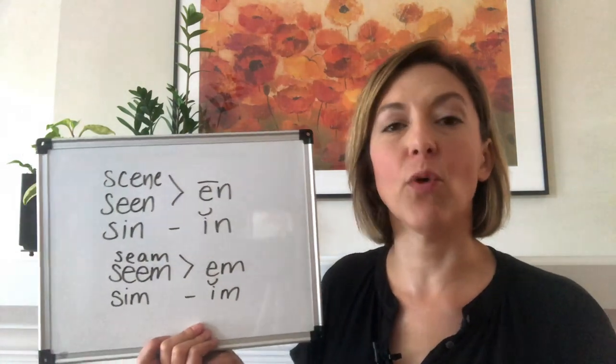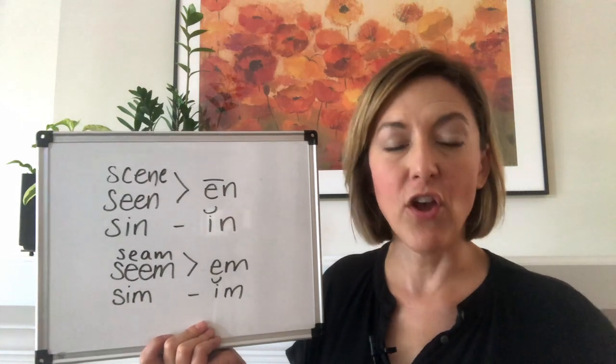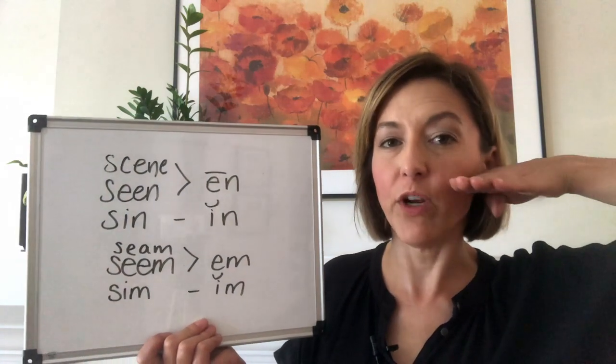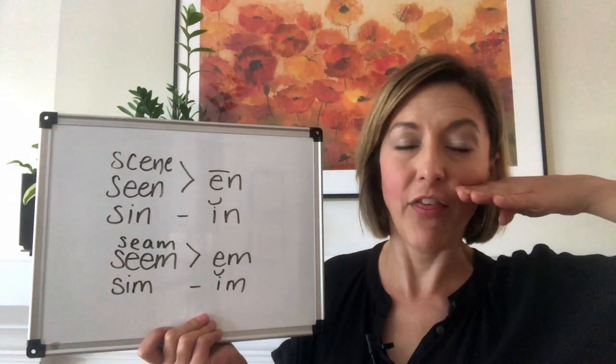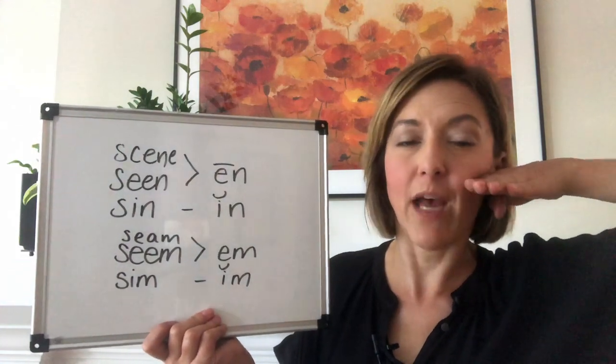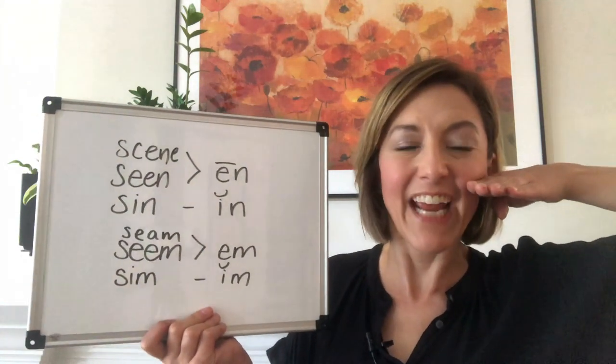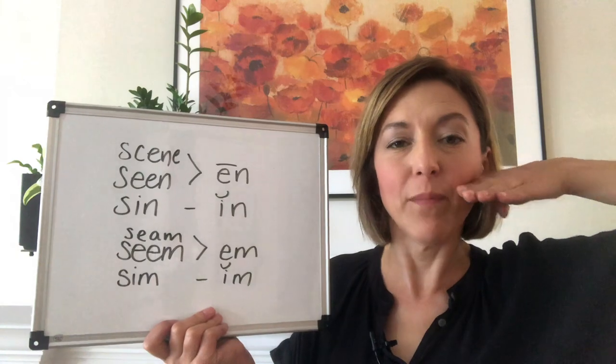Now for the long E versus the short I sound. For the long E, your tongue is going to be high in your mouth and flat. It's going to be behind your top teeth. Your lips are going to be in a smile and they're going to be tense.